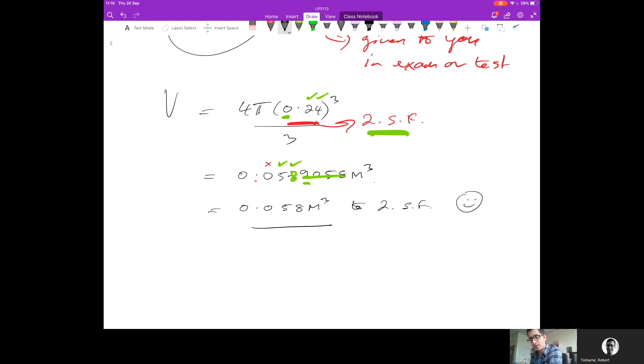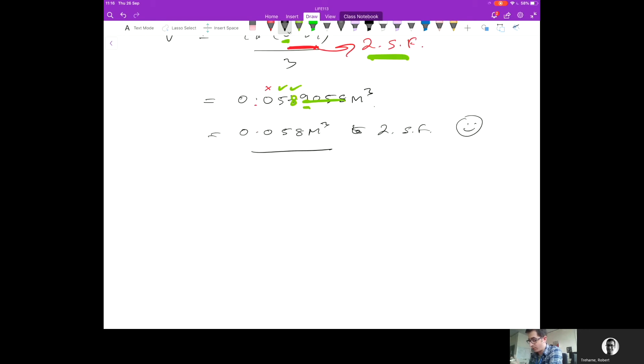What about centimeters cubed? To do that, we need to know how many centimeters cubed in one meter cubed. A meter is equal to 100 centimeters, so one meter cubed equals 100 times 100 times 100 centimeters cubed.